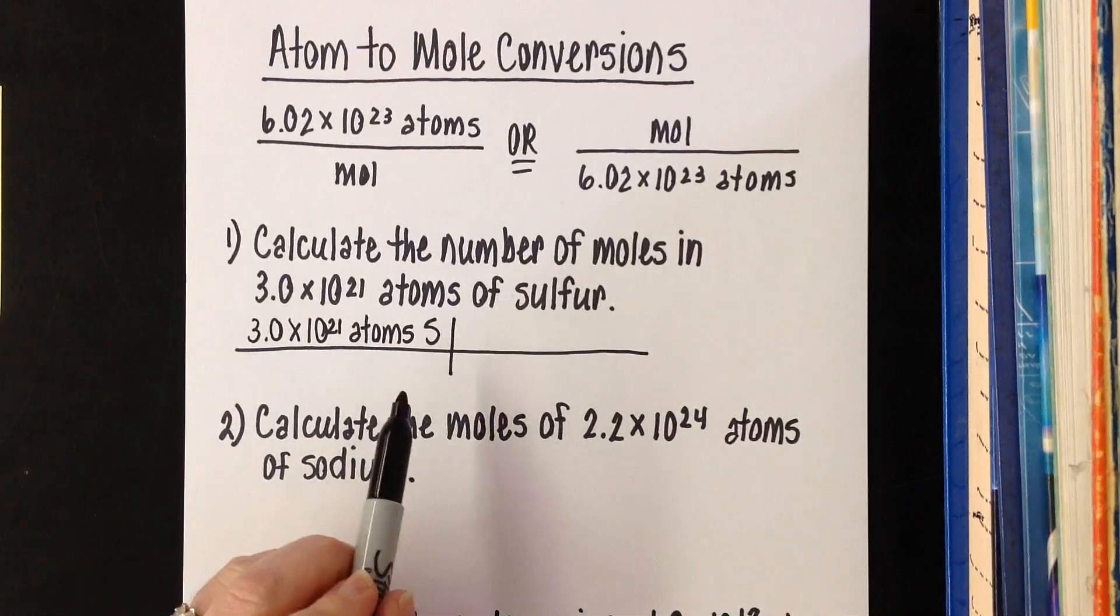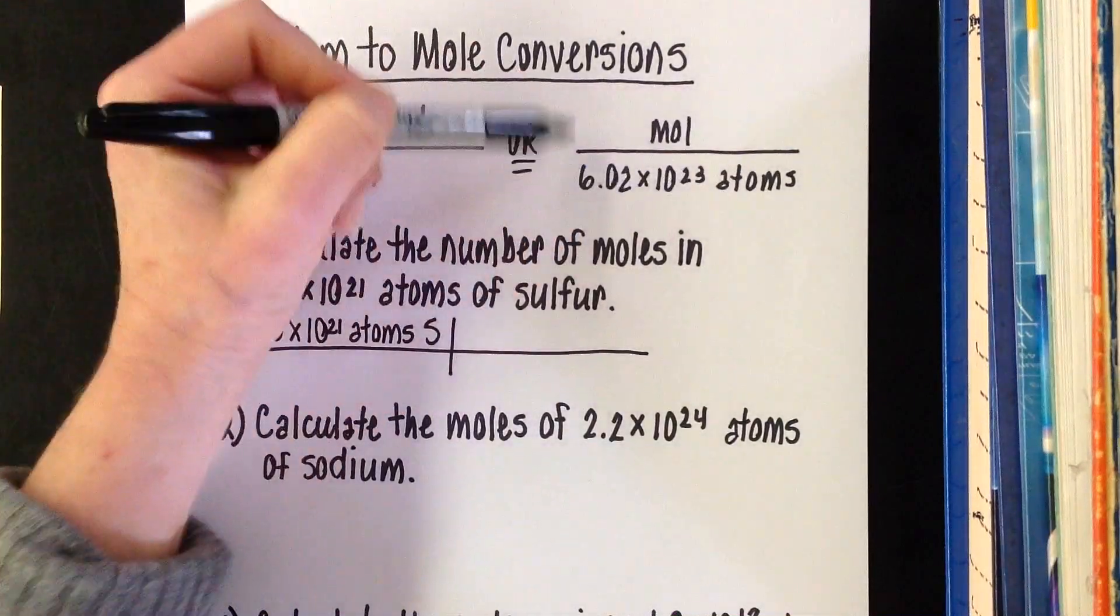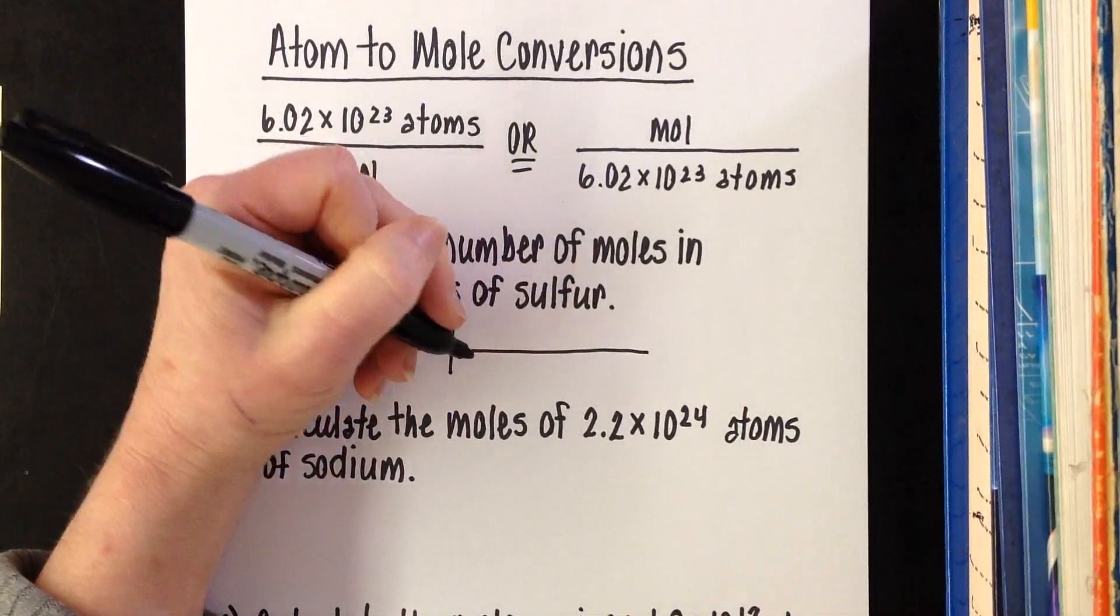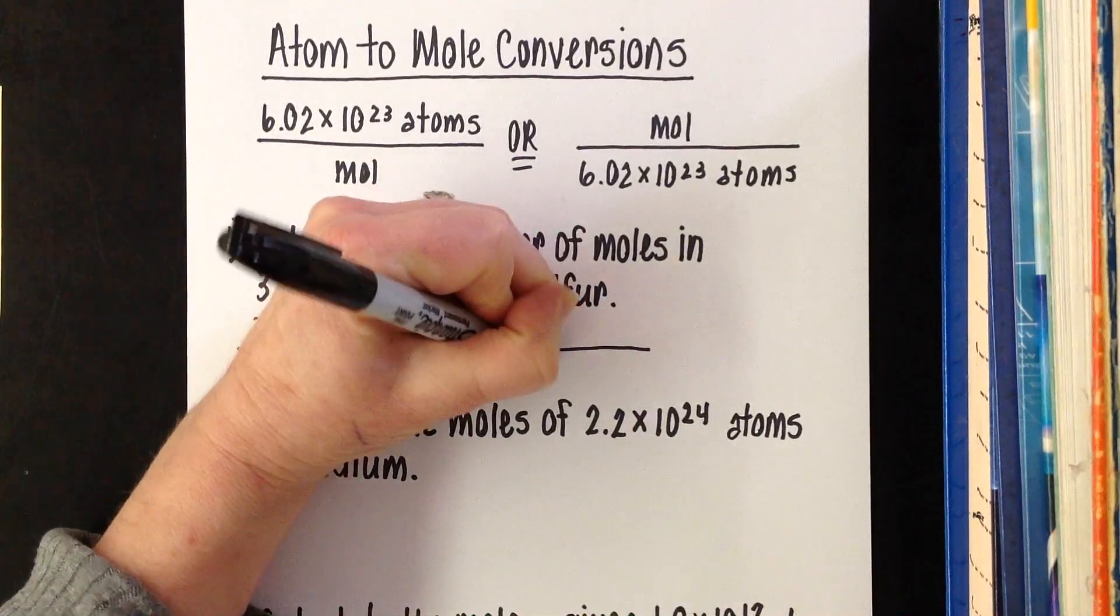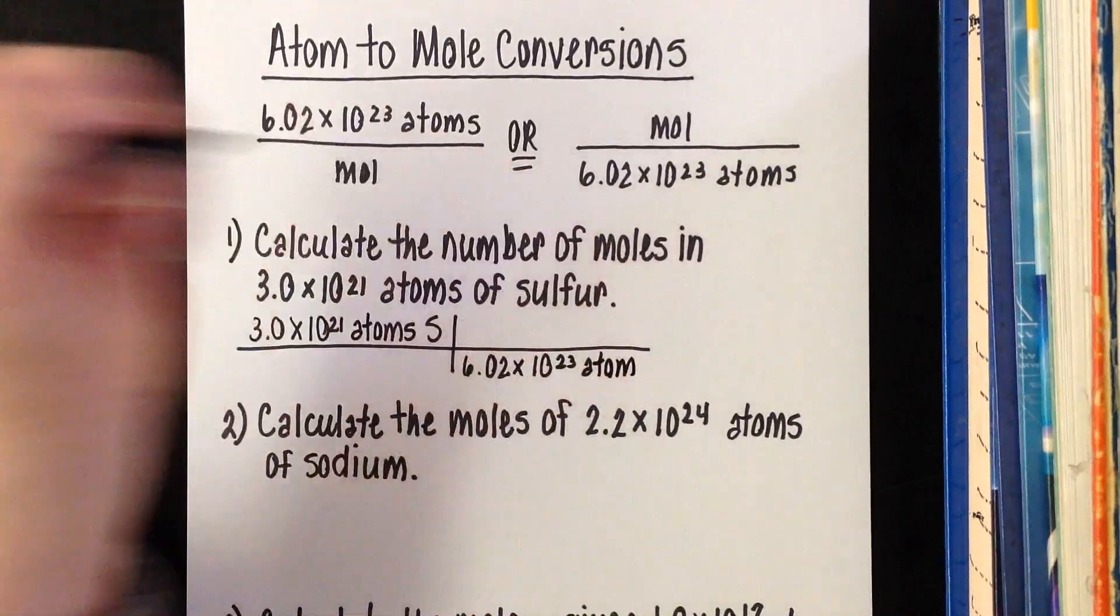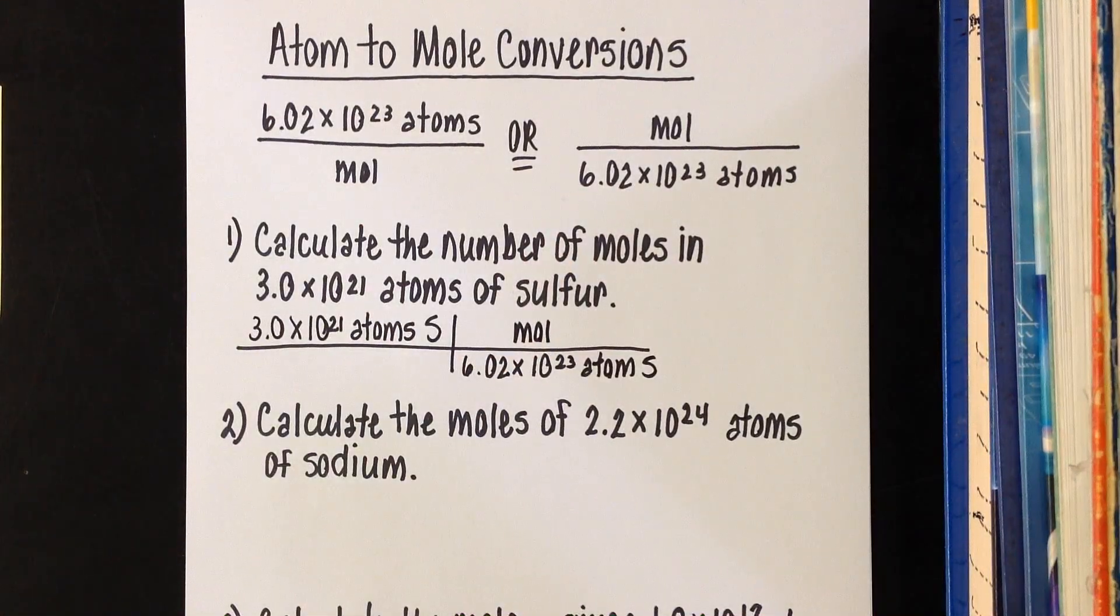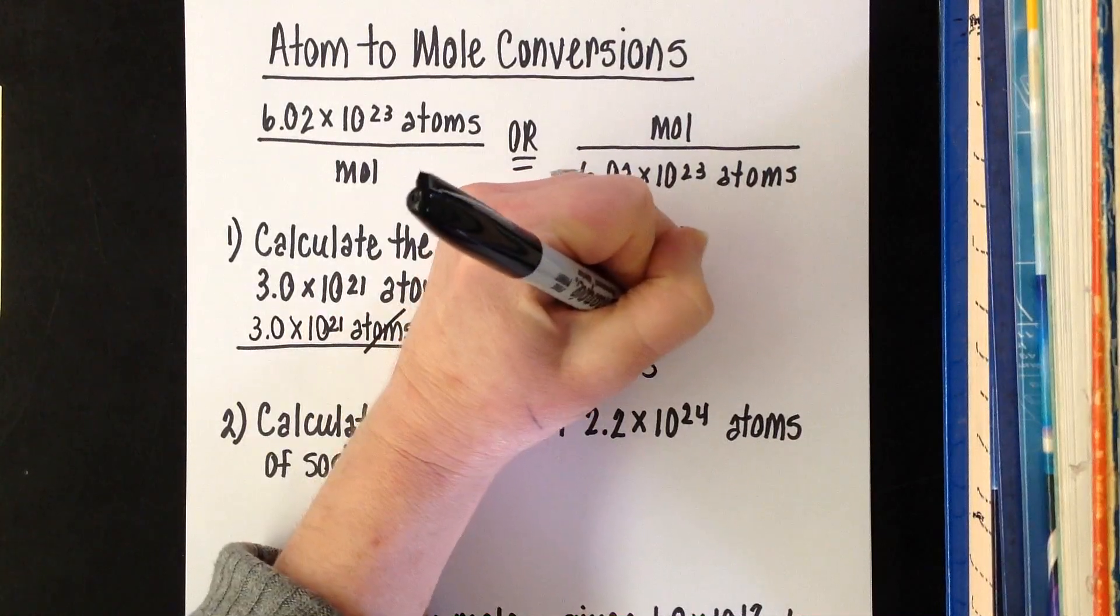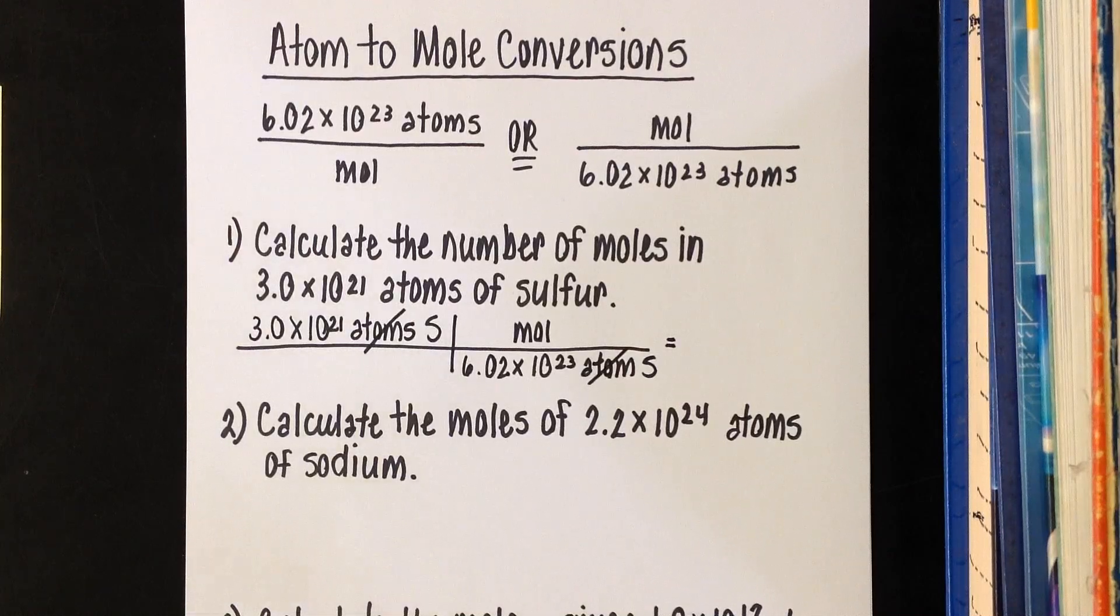Likewise, we're going to divide by 6.02 times 10 to the 23rd here. Another way you know that is whatever unit is on the top is always on the bottom in the next step. We're going to need atom on the bottom. So 6.02 times 10 to the 23rd atoms of sulfur per mole. Mole is all by itself, that's an understood one. Atoms cancel. A lot of kids will say, what about the sulfurs? Don't those cancel too? That's just labeling what it is, just good chemistry etiquette.